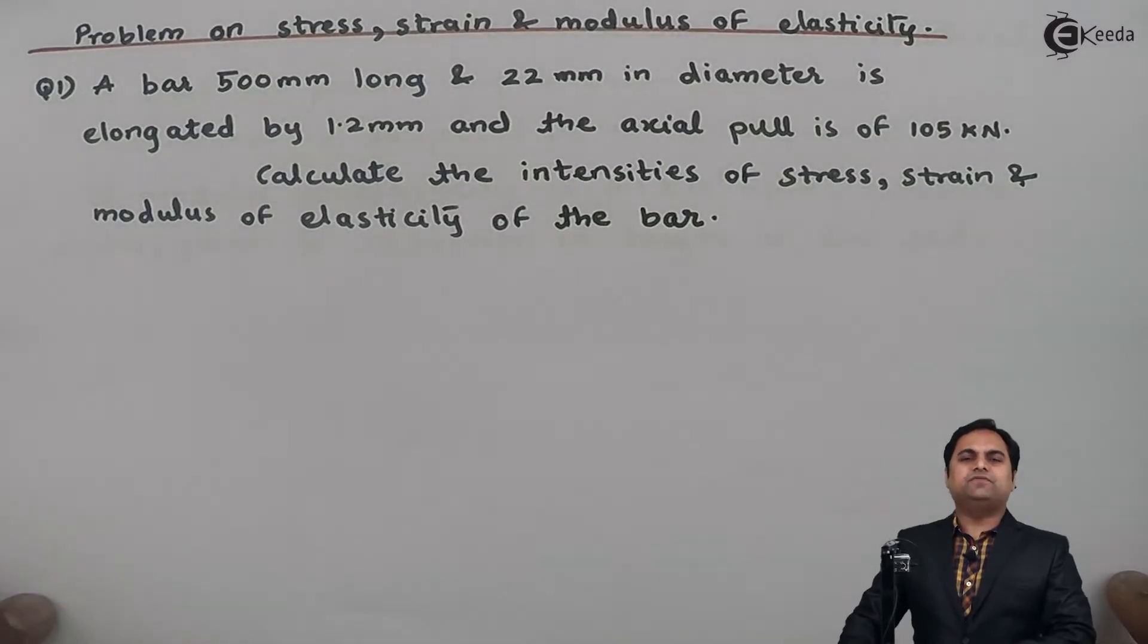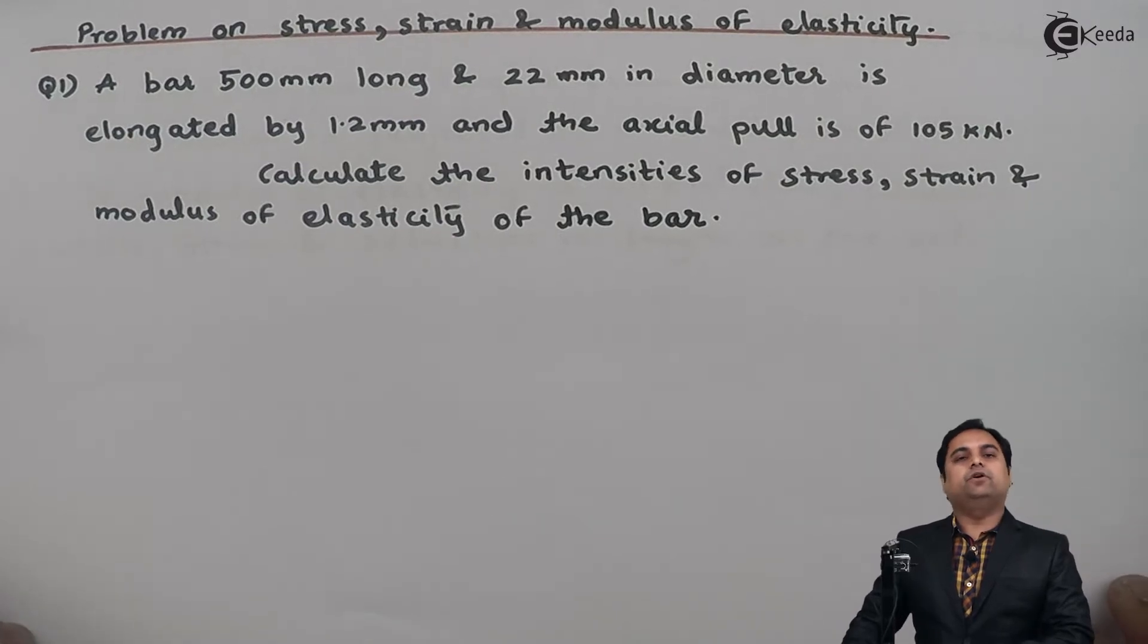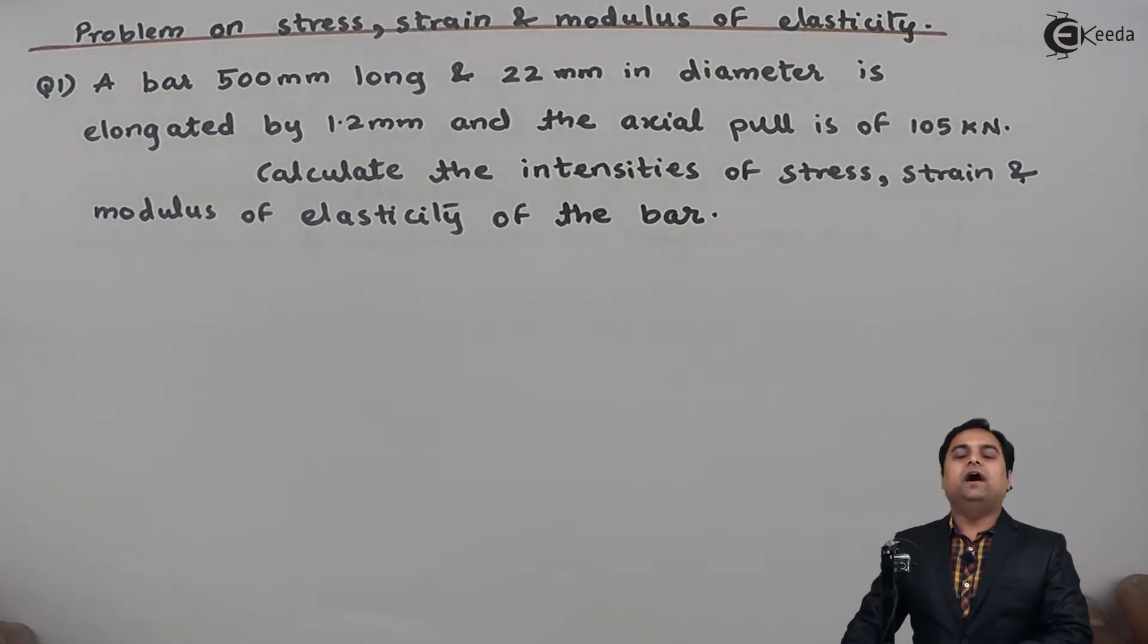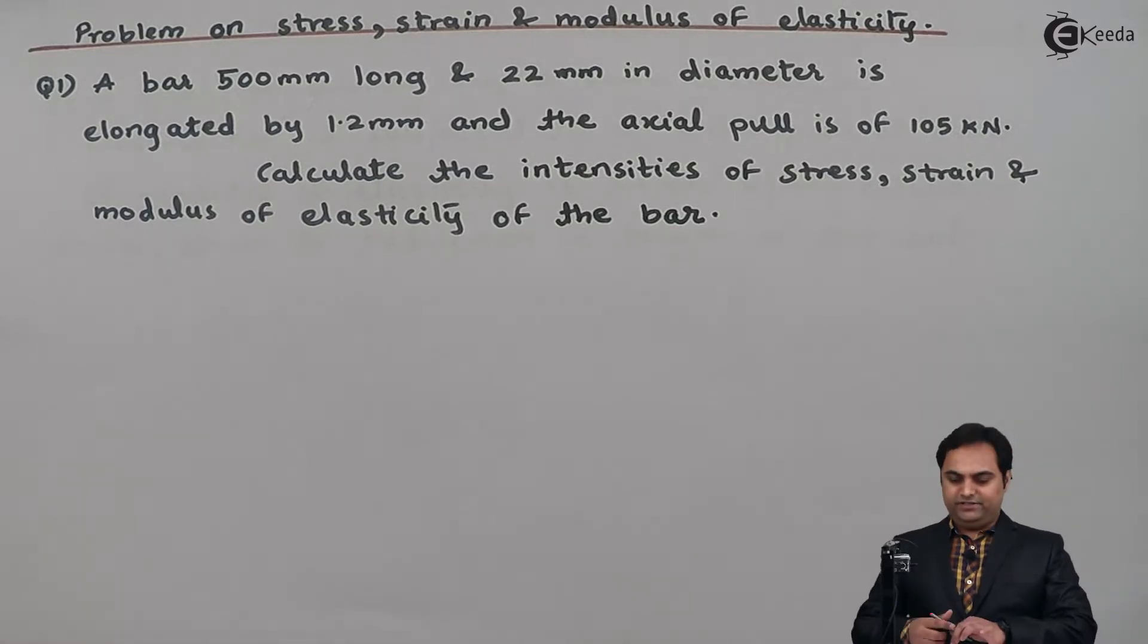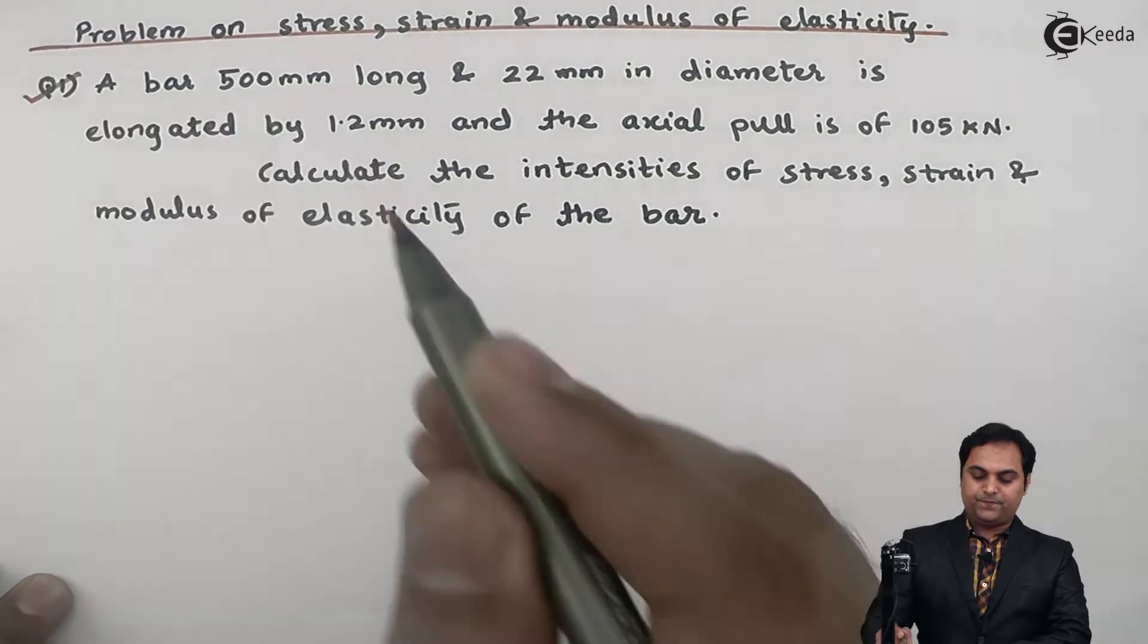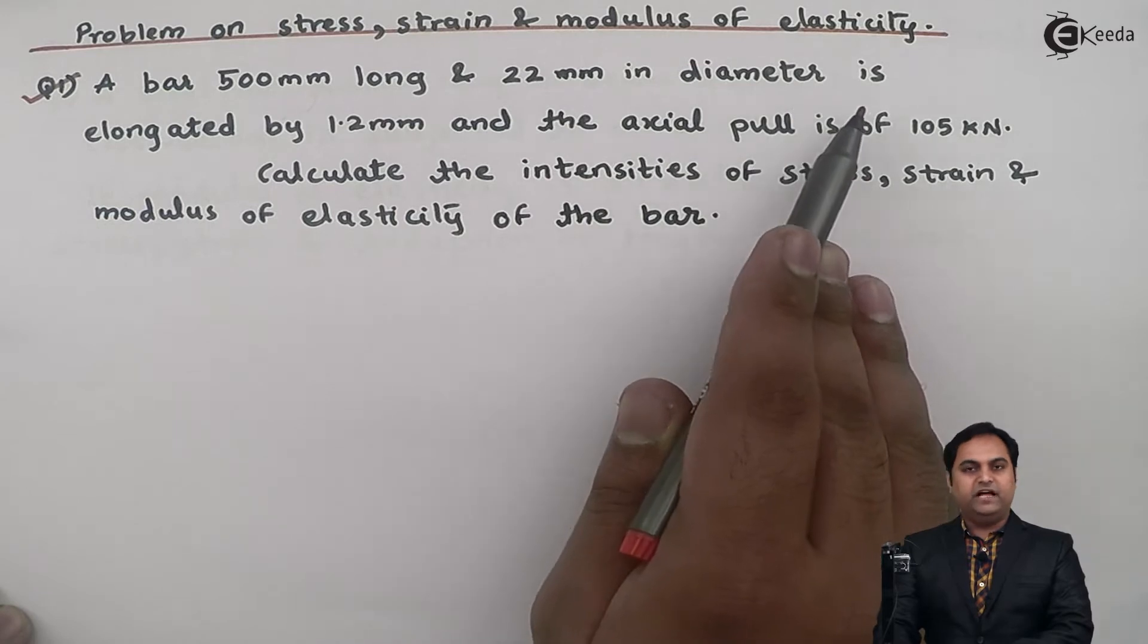Hello friends, in this video we are going to see a problem based on calculation of stress, strain, and modulus of elasticity. Here we have a question: A bar 500 mm long and 22 mm in diameter is elongated by 1.2 mm and the axial pull is of 105 kilonewton.